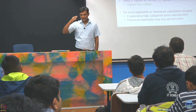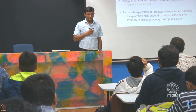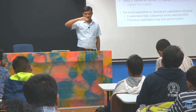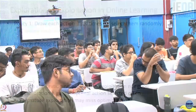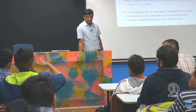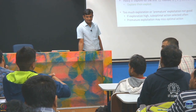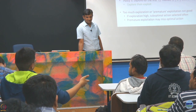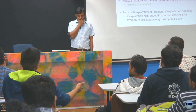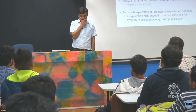We play K rounds to get one sample from each arm. After that, we compute the empirical mean. From K plus 1 onwards, we pick the one with the highest empirical mean. But there might be cases where Policy 2 is bad — for example if there are two arms, one somewhat good and one very good, but early on the bad arm looked better due to a lucky sample and you get stuck exploiting it.